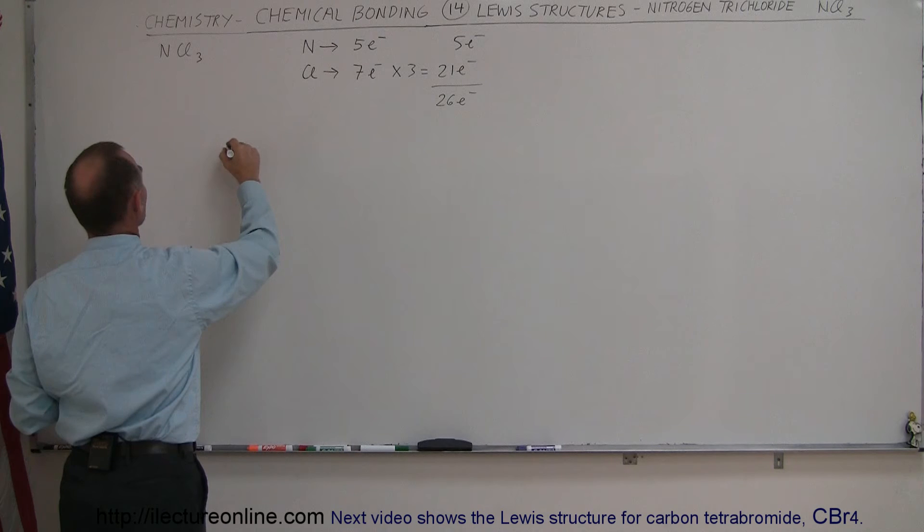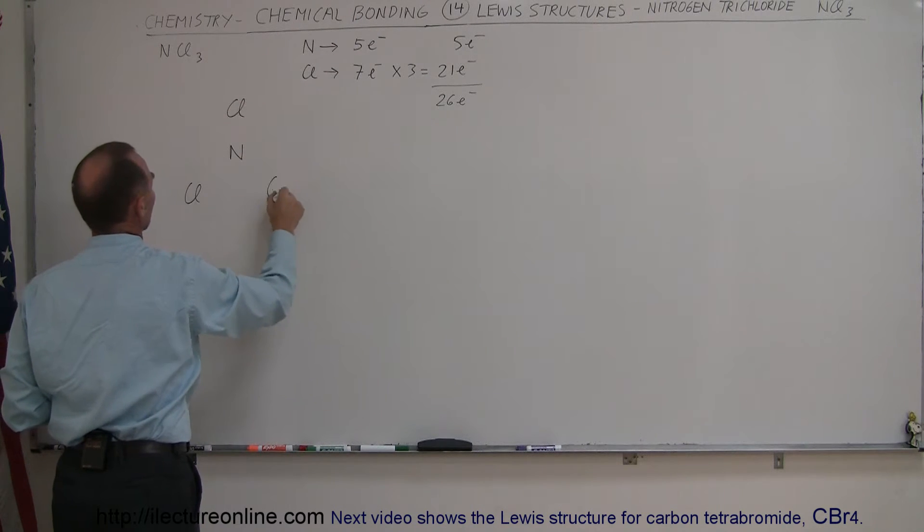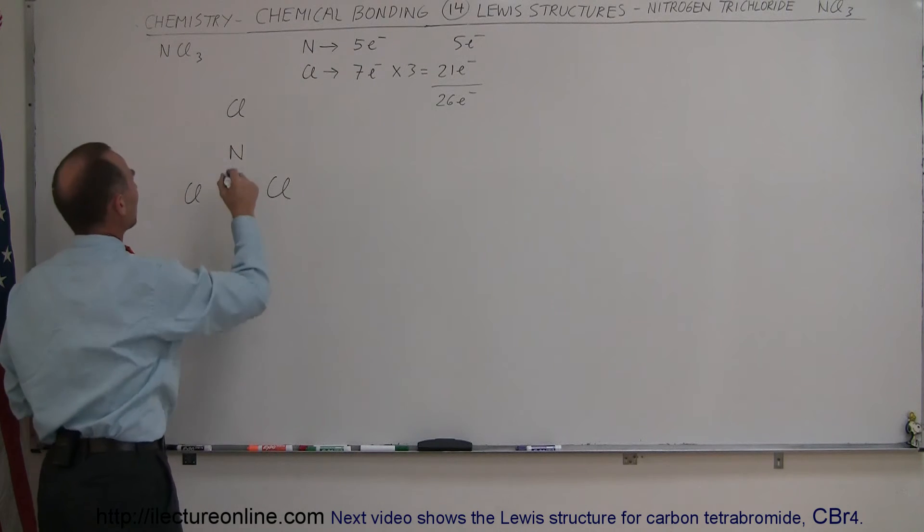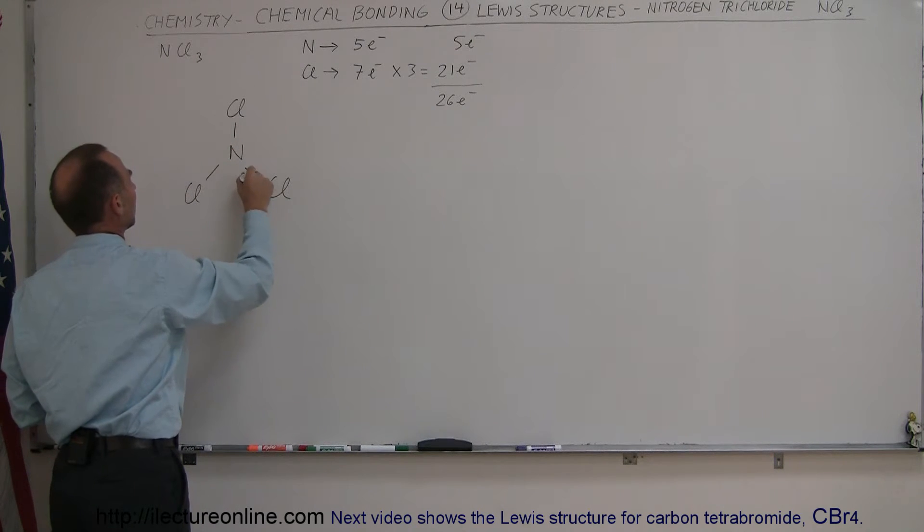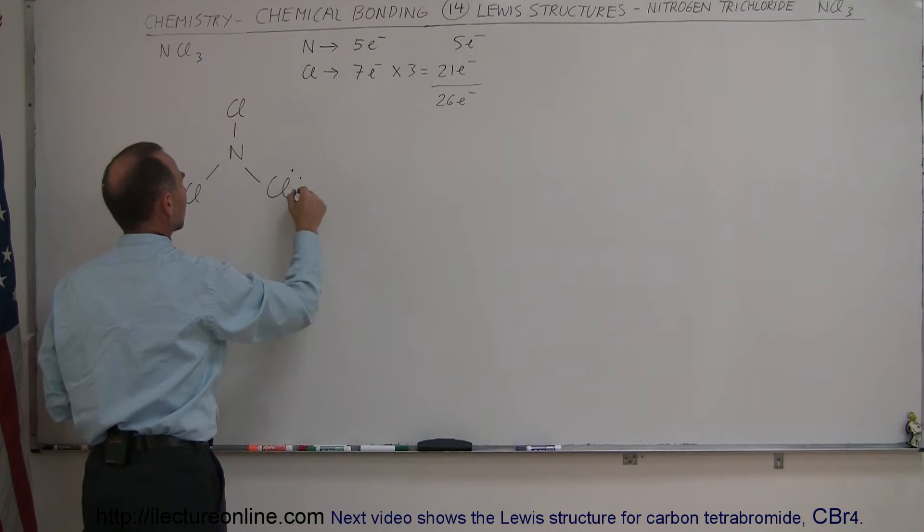All right, so nitrogen in the middle, and then we have one chlorine there, one chlorine here, one chlorine there. Okay, if we make a single bond, that means that each chlorine atom would then have six remaining electrons. So we put one set here,